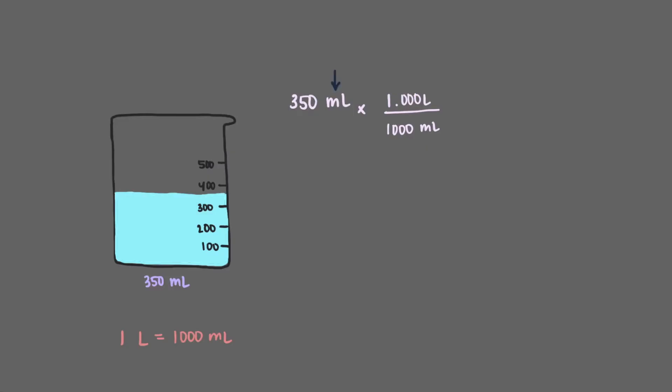Notice, milliliters is on the top and bottom, which means that we can cancel out the milliliter units, which leaves us with 350 times 1 over 1000 liters, which is equal to 0.350 liters. And there we have it. We've just proven that the two beakers do, in fact, contain the same amount of water.